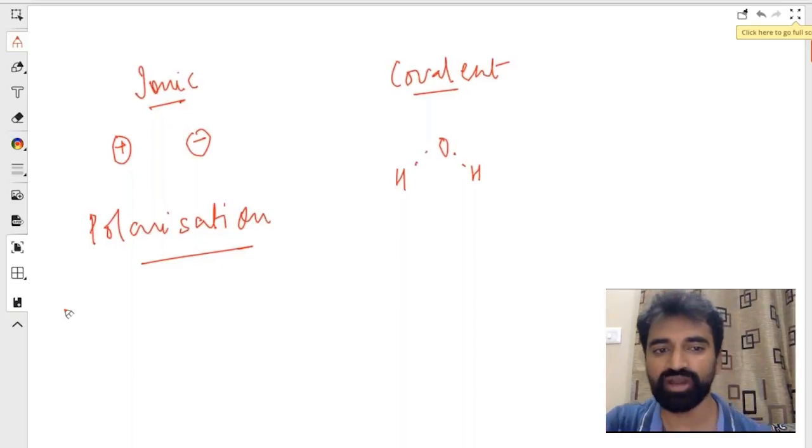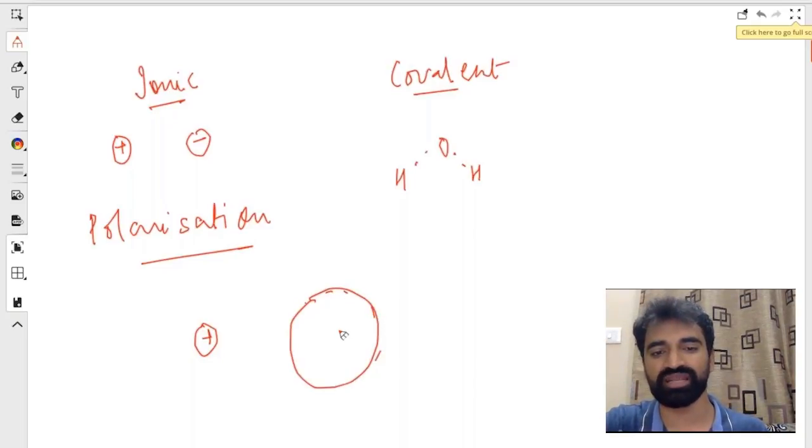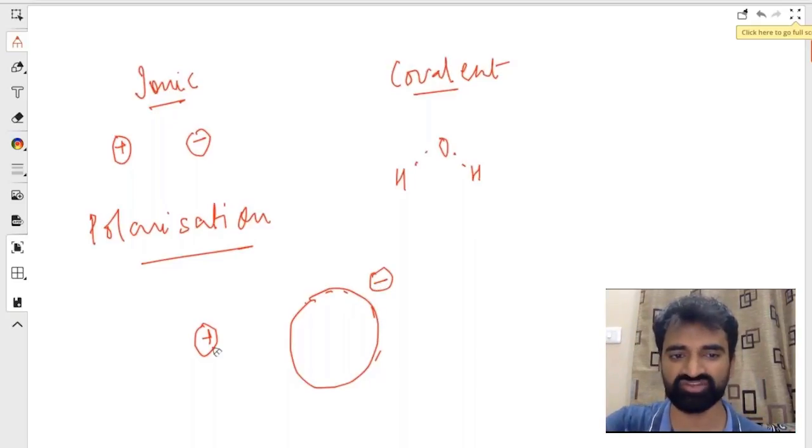Let's start with the ionic part. I have a very positively charged small nucleus over here and a very large number of electrons, a negatively charged entity over here. These two are attracted and they form an ionic bond. What happens next? This positive charge will attract these electrons, and these electrons are loosely bonded so they can stretch.